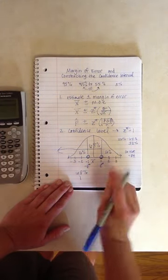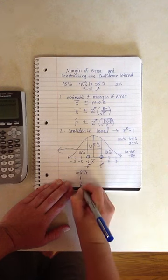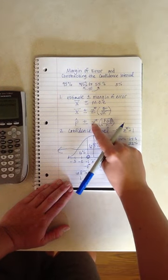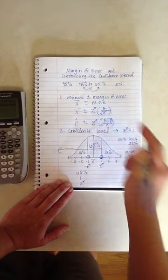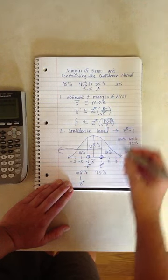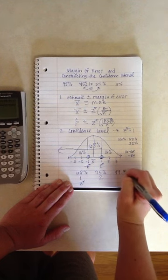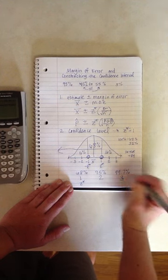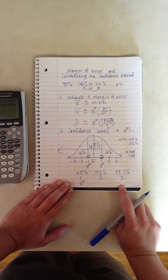68%, this is one deviation away. So your Z star, you're going to fill in a one here or here. 95%, two deviations away, and 99.7% of the data ends up being three. It's pretty cool.